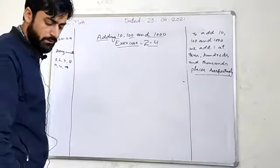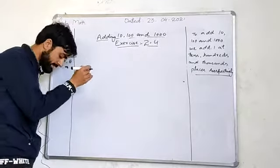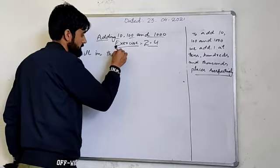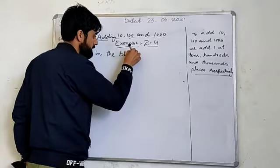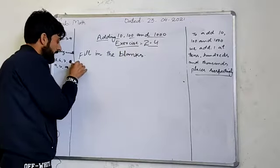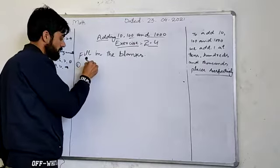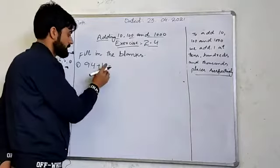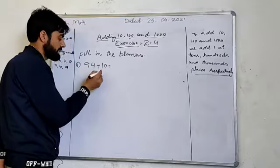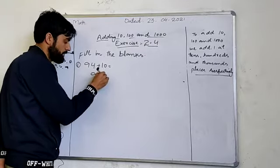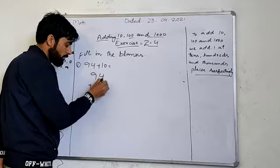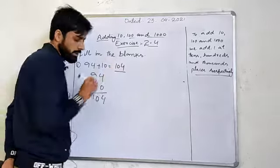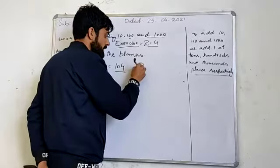This is a fill-in-the-blanks exercise. The first part is 94 plus 10. If you look at this, 94 plus 10: 4 plus 0 is equal to 4, 9 plus 1 is equal to 10, so the answer is 104.